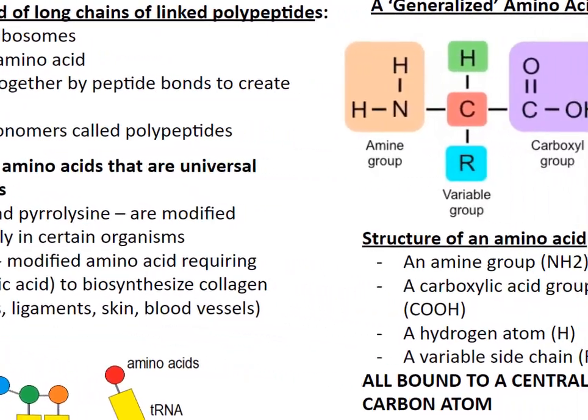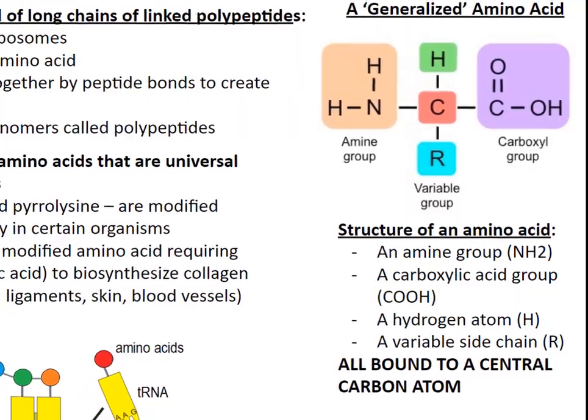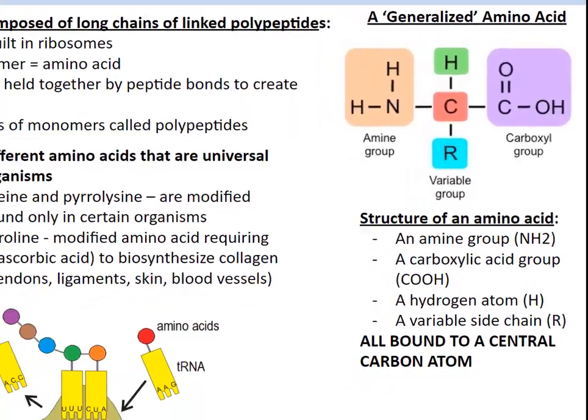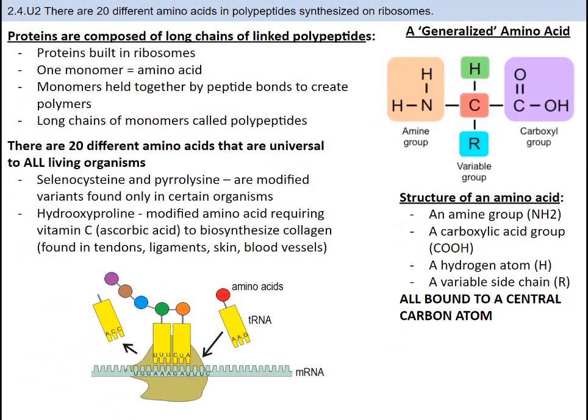Amino acids all share a common basic structure with a central carbon atom bound to the following: an amine group (NH2), a carboxylic acid group (COOH), a hydrogen atom, and a variable side chain, which is the R group. The variable group is the part of the amino acid that is different for each of the 20. Additionally, it's worth mentioning that one very important amino acid, hydroxyproline, is a modified amino acid requiring vitamin C, better known as ascorbic acid, to biosynthesize collagen. Collagen is found in tendons, ligaments, skin, and blood vessels. This is an example of how our diet and nutrition is also important for amino acid formation.